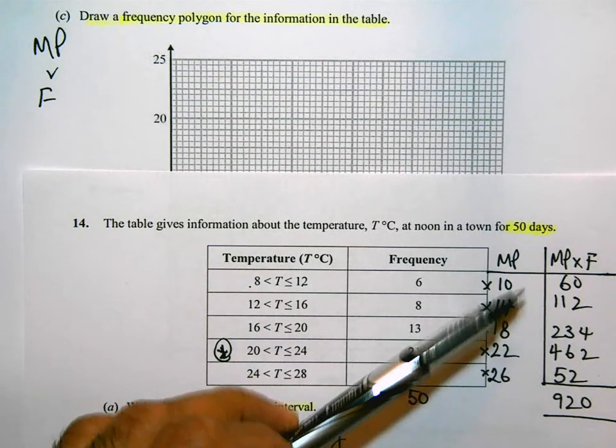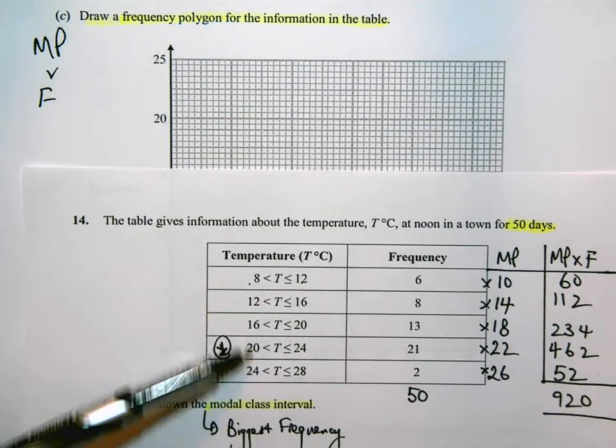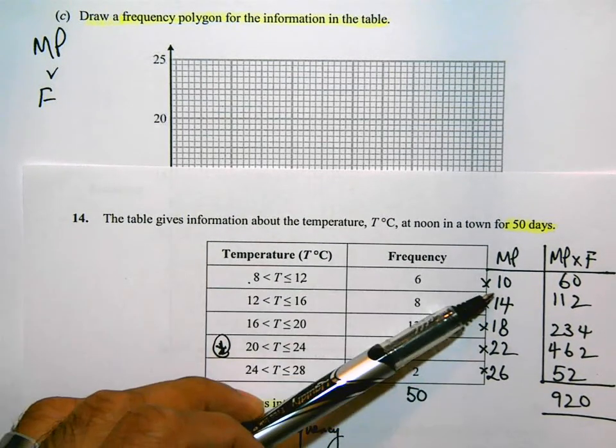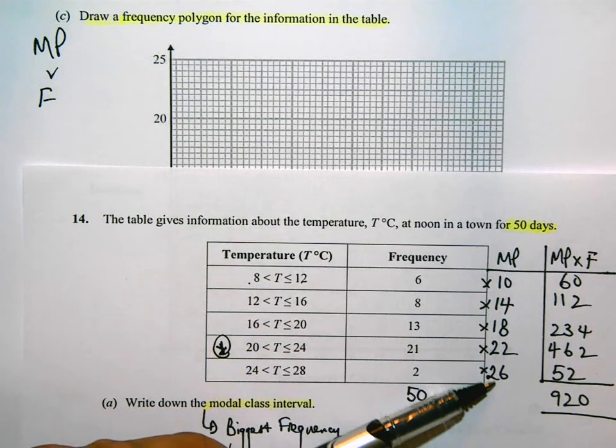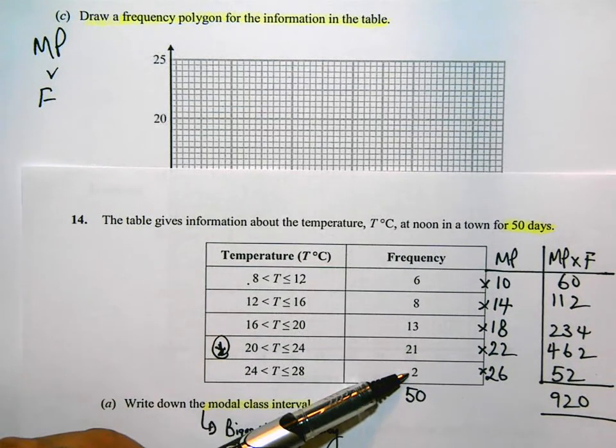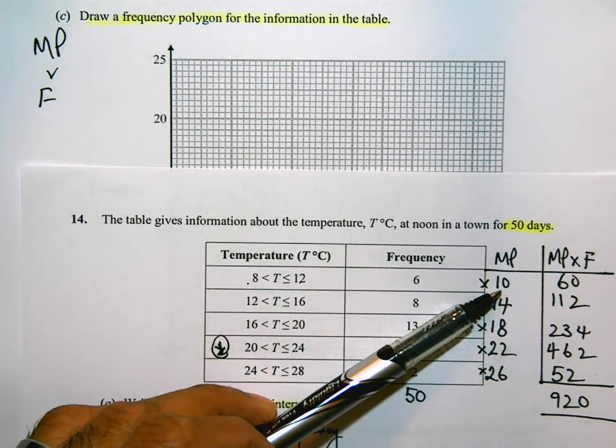10, 14, 18, 22, and 26 are going to be plotted against the frequency. So, the first point I'm going to plot is I'm going to go 10 across, and then up to 6 on the frequency. I need to have a look at the scales though.